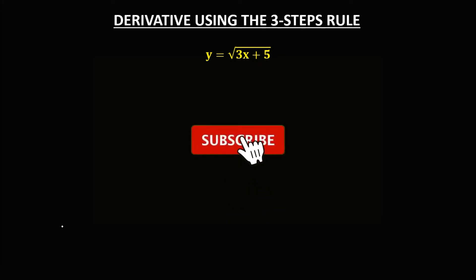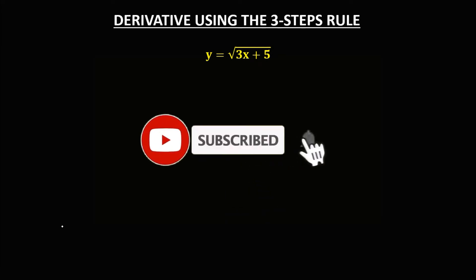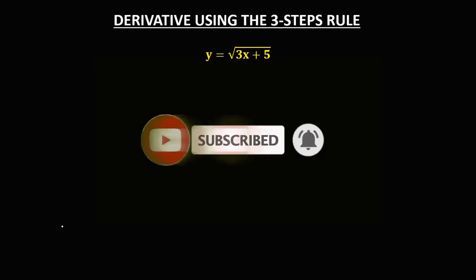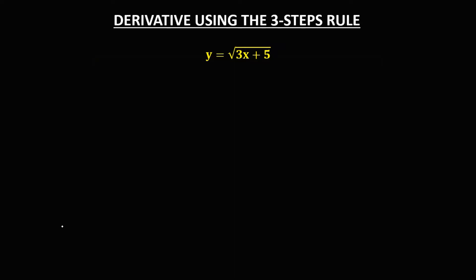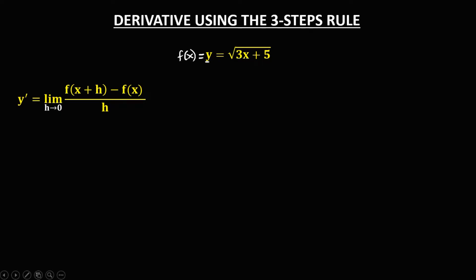Let's solve this problem. To find the derivative of a radical using the three-step rule — this is the formula for the three-step rule. In the given, y is the same as f of x.